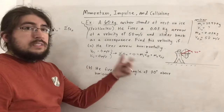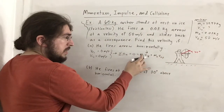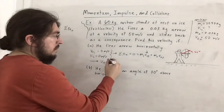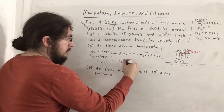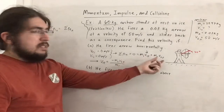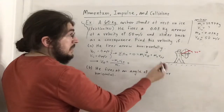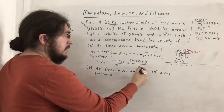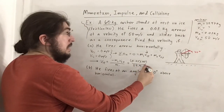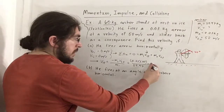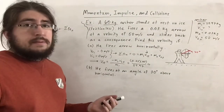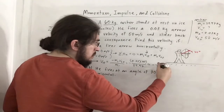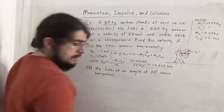Plugging in: v1f = −(0.03 × 50) / 59.97 ≈ −0.025 m/s. The negative sign means the archer slides backward, opposite to the arrow's direction. That's the answer for part A — the archer slides back at approximately 0.025 m/s.